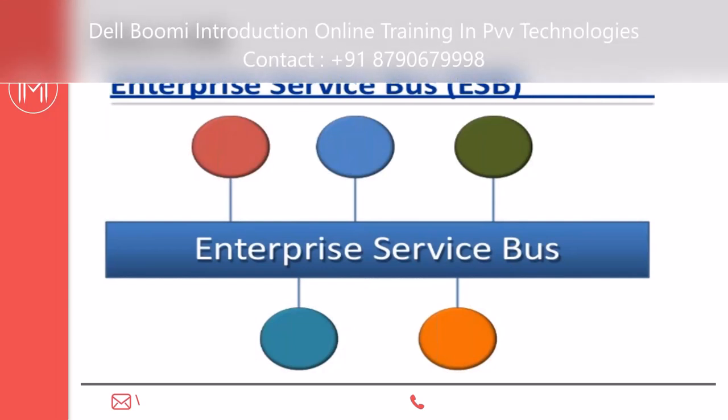The Enterprise Service Bus (ESB) is a middleware, also called a broker, that sits between two applications. It follows Service Oriented Architecture (SOA) principles and allows different applications to communicate and talk to each other. The ESB provides flexibility and protocols to enable these inter-application communications.